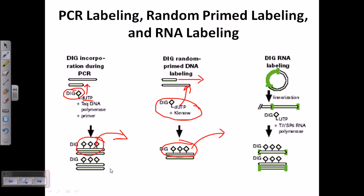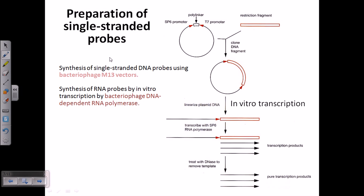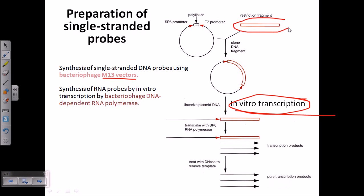These are the two techniques for obtaining double-stranded DNA probes. We can also produce RNA probes via in vitro transcription experiments. For this, we utilize M13 vectors. We take the vector and insert a restriction fragment of the DNA segment we want to use as our probe. We clone it into the polylinker region of the M13 vector by substituting the polylinker segment with our restriction fragment of interest.